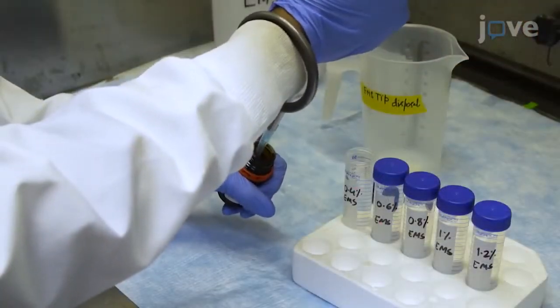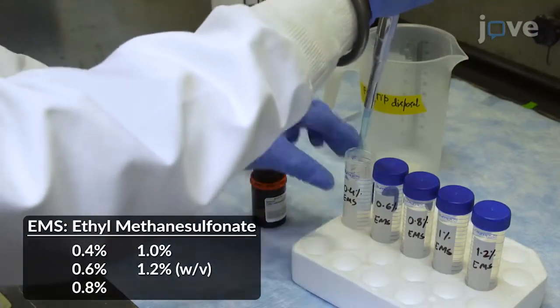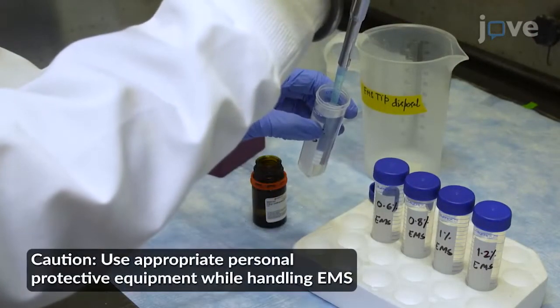Then, in a fume hood, prepare 50 milliliters of EMS solutions of 5 different concentrations by mixing EMS liquid in distilled water.